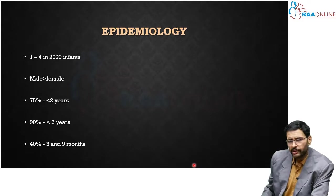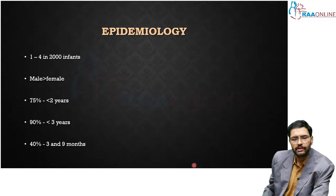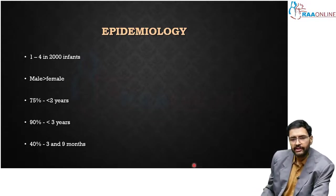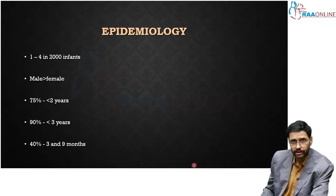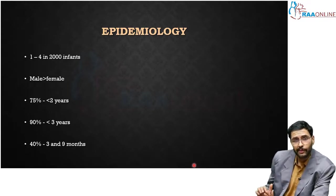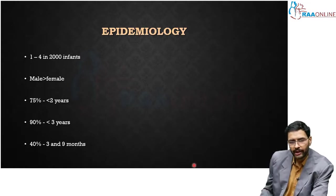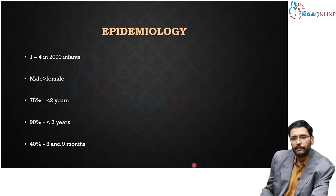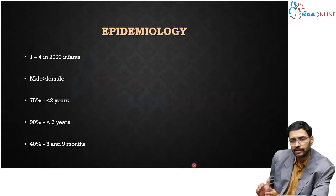Intussusception is very common among infants. The incidence is about 1 to 4 in 2000 infants with a proposed male predominance. The incidence seems to be highest under 2 years of age, with 75% of cases occurring in children less than 2 years and 90% in children less than 3 years. Notably, 40% of cases occur in children between 3 to 9 months of age, making that a very important period.